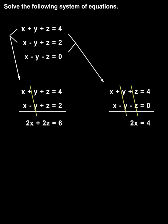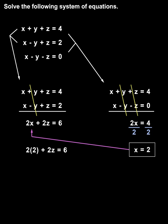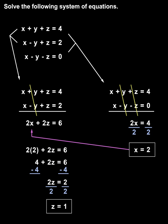So we have 2x equals 4, and dividing both sides by 2, x equals 2. Since we know that x equals 2, we plug 2 in for x in the equation we created earlier — 2x plus 2z equals 6 — and we can solve for z. We get 2z equals 2, and dividing both sides by 2, z equals 1.